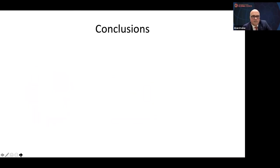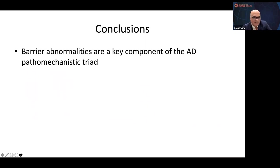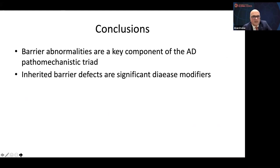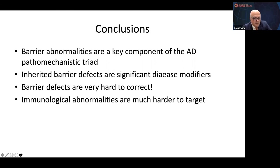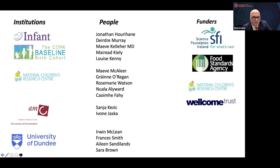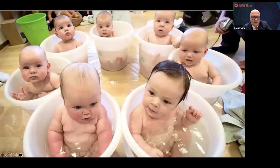In conclusion, barrier abnormalities are a key component of the AD pathomechanistic triad, along with dysbiosis and immune abnormalities. Barrier defects are significant disease modifiers and very hard to correct — there's no easy way to correct these. Immunological abnormalities are much easier to target, as Emma has shown. These are all the people I've worked with and funders over the last 15 years. Thank you very much — we'll take questions in the joint session afterwards.